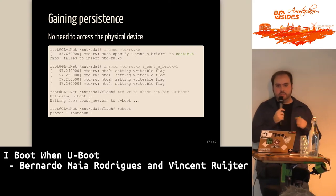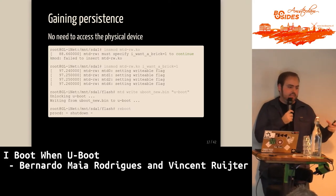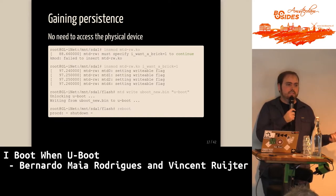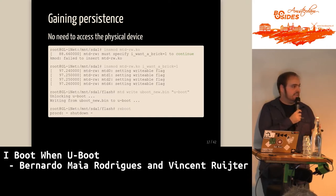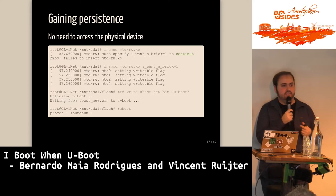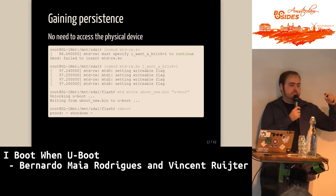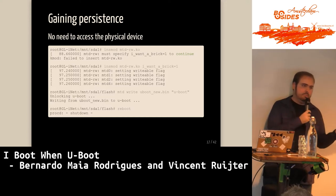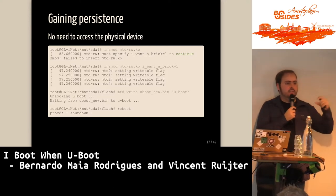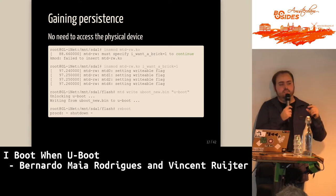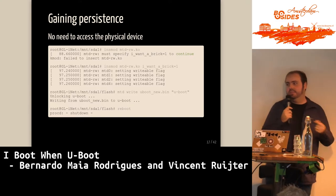One important thing to mention: if I have two similar devices, the U-Boot partition is not going to be exactly the same because there are variable areas — like serial number and MAC address — that differ. What we can do is DD only the offsets related to the U-Boot bootloader code and skip the serial and MAC address areas.